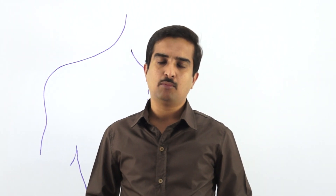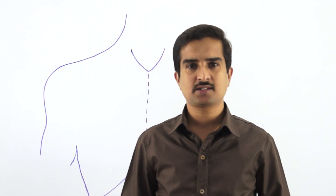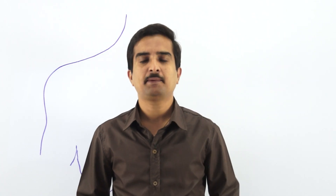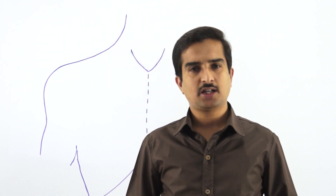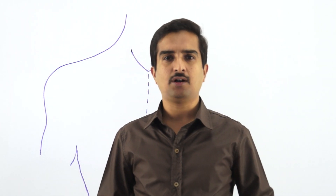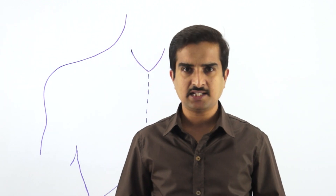The superficial fascia of the pectoral region contains a moderate amount of fat. It also contains cutaneous nerves, which are derived from the cervical plexus as well as from the intercostal nerves. Along with the cutaneous nerves, there are cutaneous vessels derived from the internal thoracic artery and the posterior intercostal arteries.